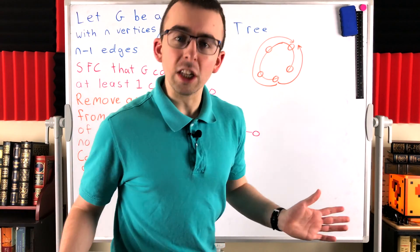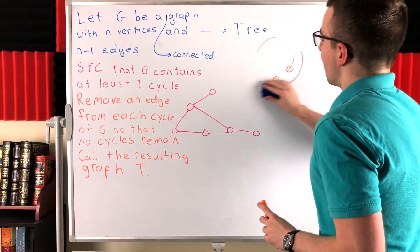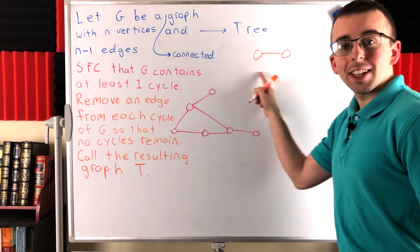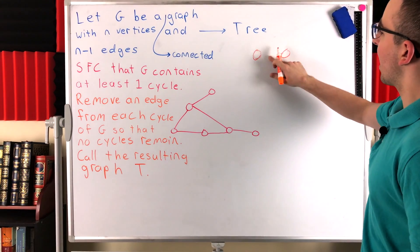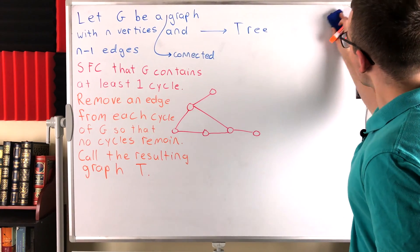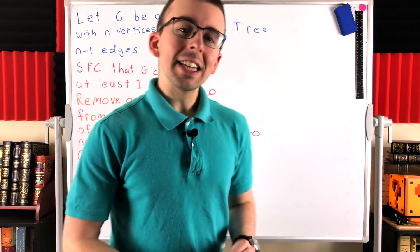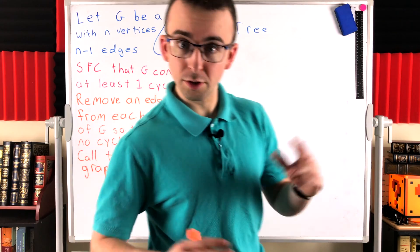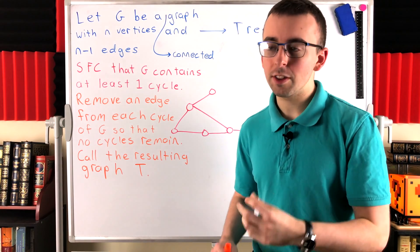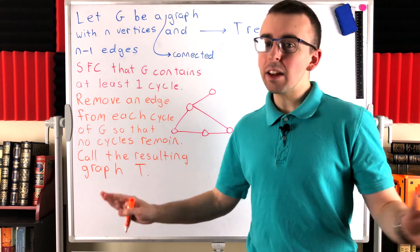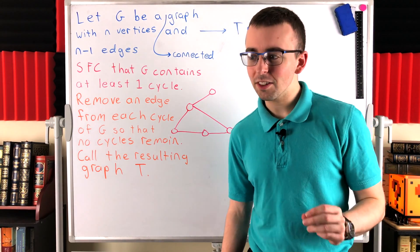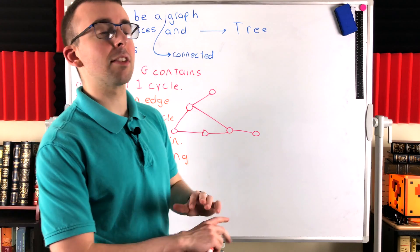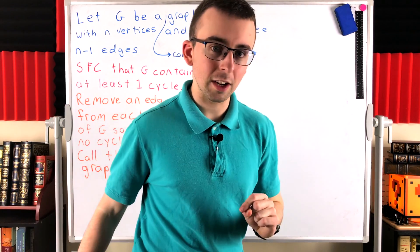To be less wishy-washy about it: if we delete an edge and that disconnects a graph, such an edge is called a bridge. You may be familiar with this already. If we have a graph and deleting a particular edge disconnects it, that edge is called a bridge. As it turns out, an edge is a bridge if and only if it lies on no cycles. I'll leave a link in the description to my lesson proving that result. So since we're only deleting edges that are on cycles, we're never going to disconnect the graph, because none of those edges can possibly be bridges.